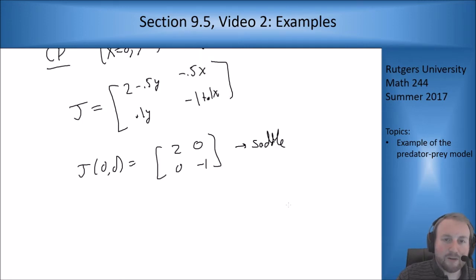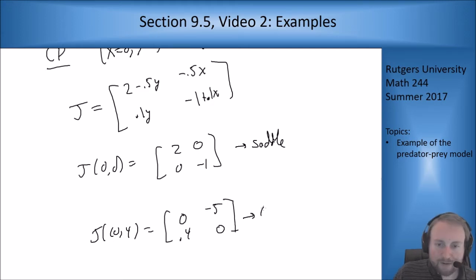If I plug in my other point, my (10,4), J(10,4) is going to be [0, minus 5; 0.4, 0], which is going to be my center.